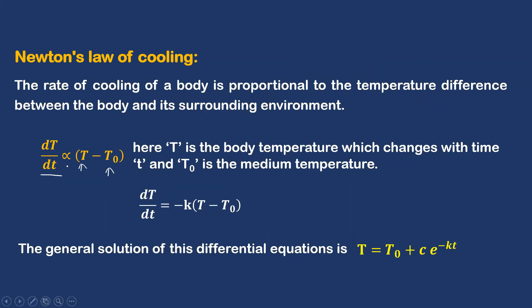For any body kept idle for a certain time, the temperature drops down automatically. Since time increases as temperature decreases, these two behave in opposite directions, so we replace the proportionality with a negative constant. Thus, dT/dt = −k(T − T₀). This is a simple first order ordinary differential equation. When solved using the variable separable method, we get the solution: T = T₀ + C·e^(−kt).